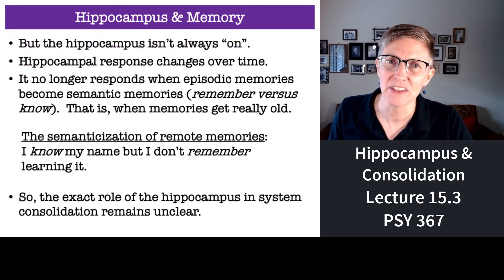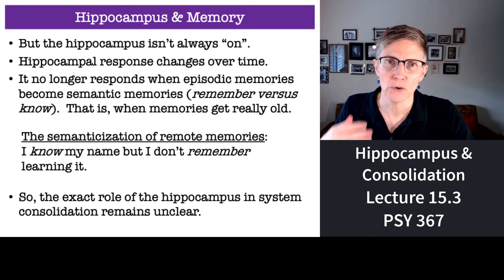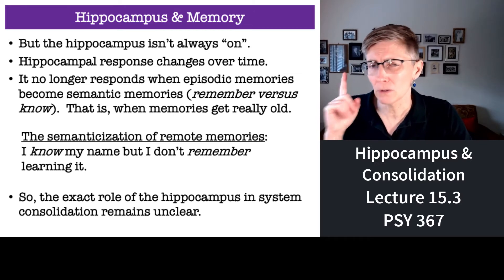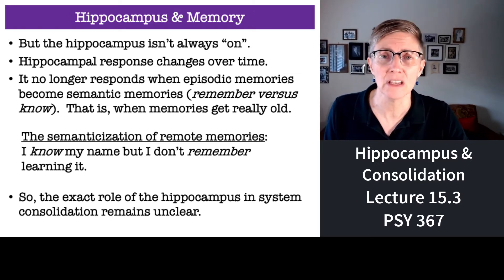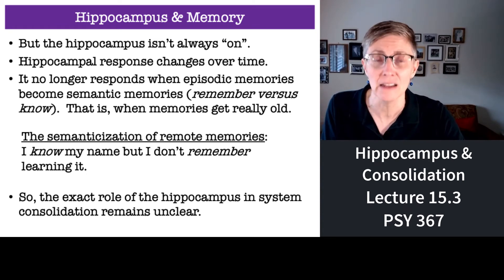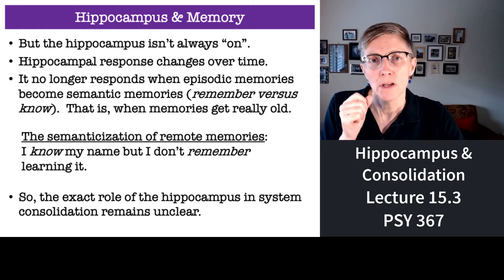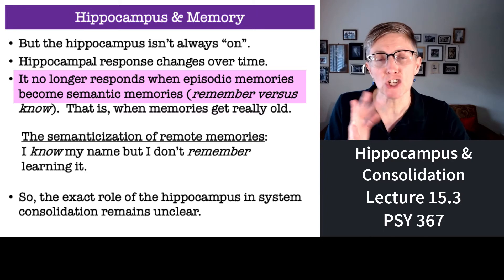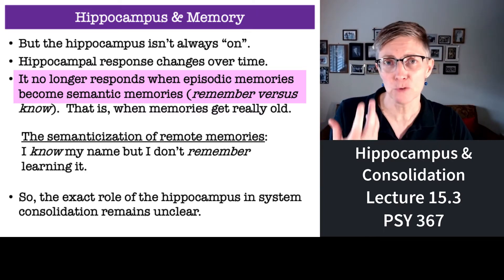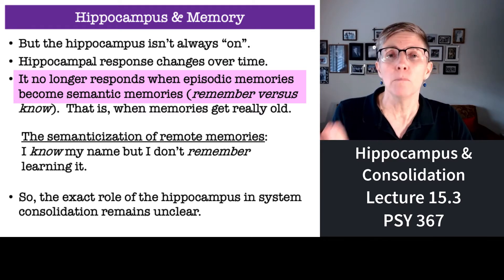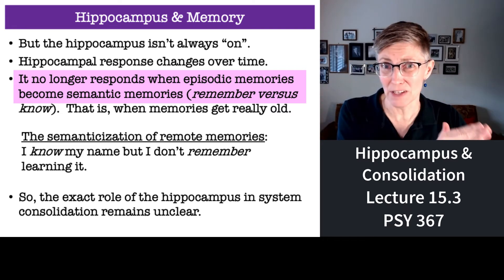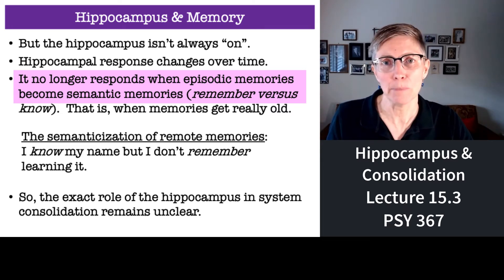We've talked about the semantization of old memories. For example, I know my name is Maggie, but I don't remember learning that. I know Sacramento is the capital of California, but I don't remember it as an episodic memory — it's a semantic memory, a fact. Hippocampal activity reflects that shift from episodic to semantic memories. The hippocampus responds during episodic memories, but once an episodic memory becomes so old it's now semantic, the hippocampus doesn't respond anymore.